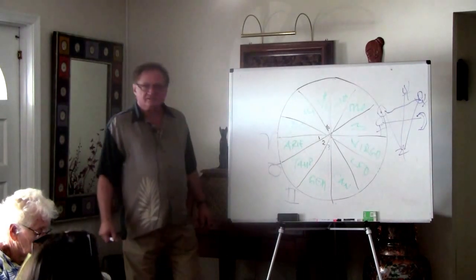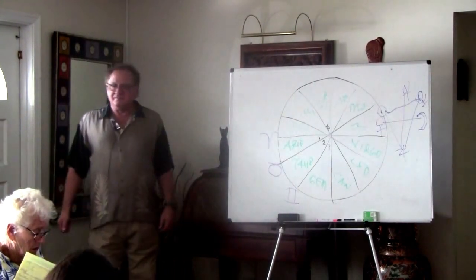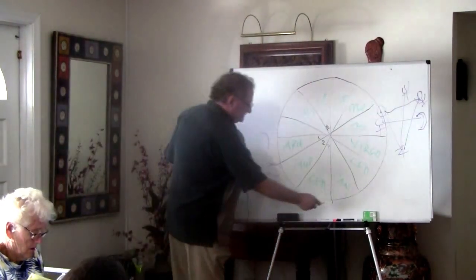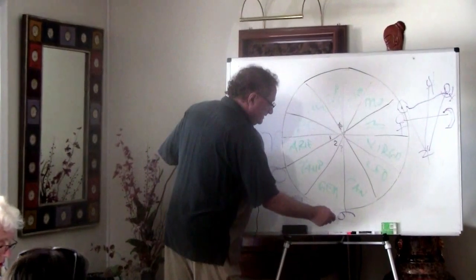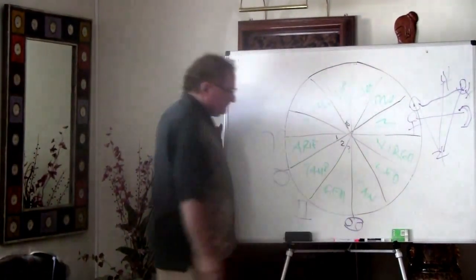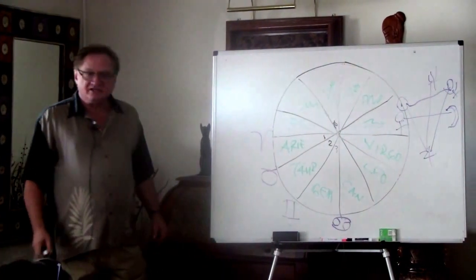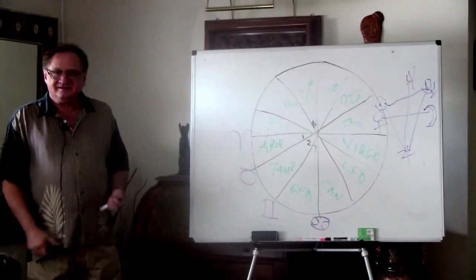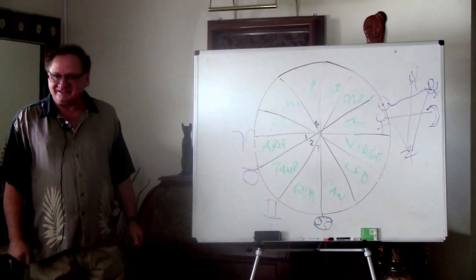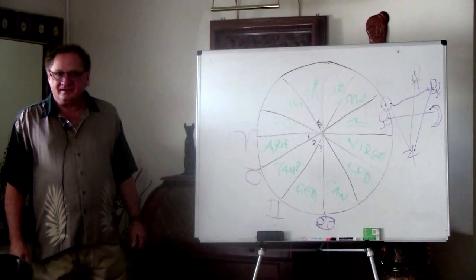And then Cancer. Cancer is easy. Crab, right? So it looks like this, Cancer. The easy way to remember this is Cancer rules your breast. Does that look like maybe possibly could be that? Yeah.